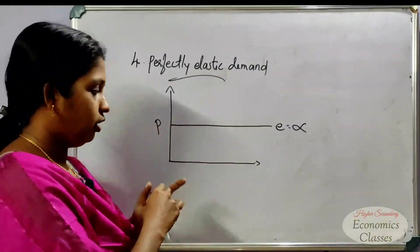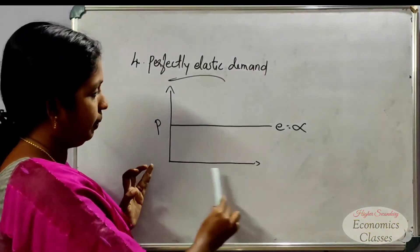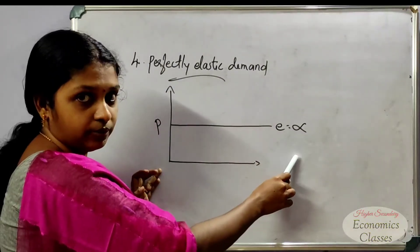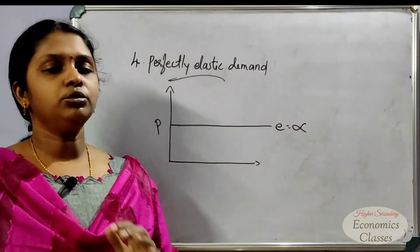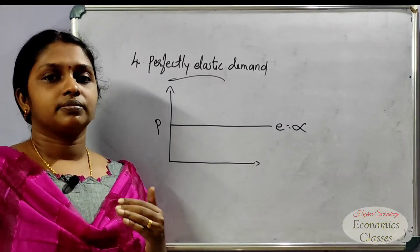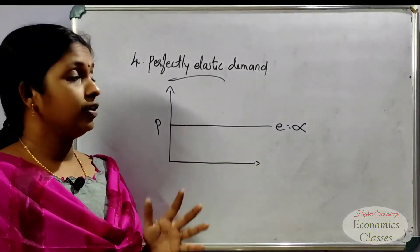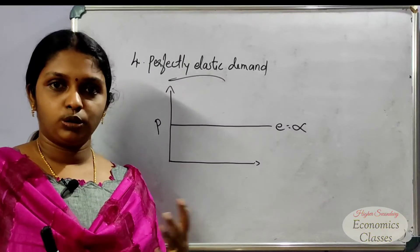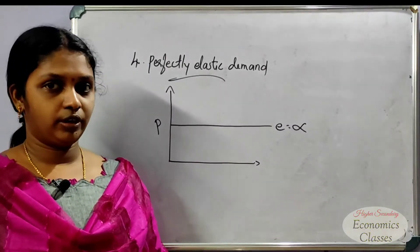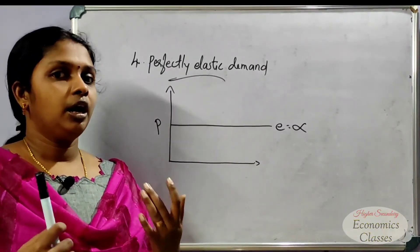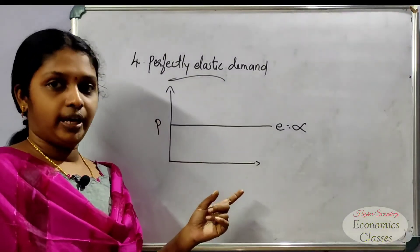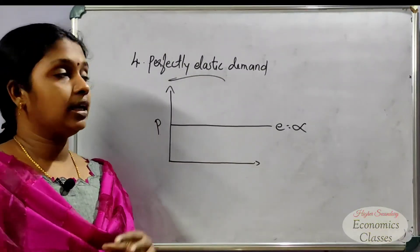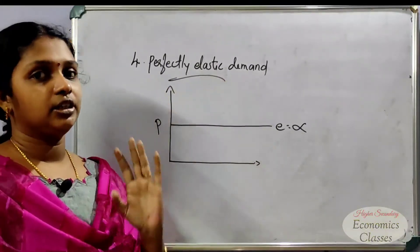The demand curve for perfectly elastic demand is parallel to the horizontal axis — it is a horizontal line. If the shape is horizontal to the x-axis, and the elasticity value is infinity, that is perfectly elastic demand.